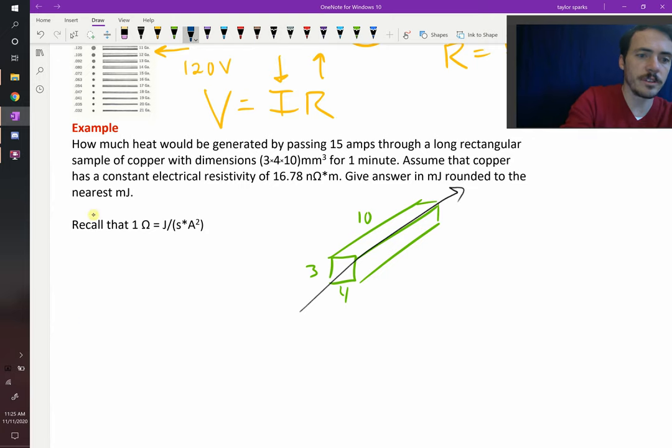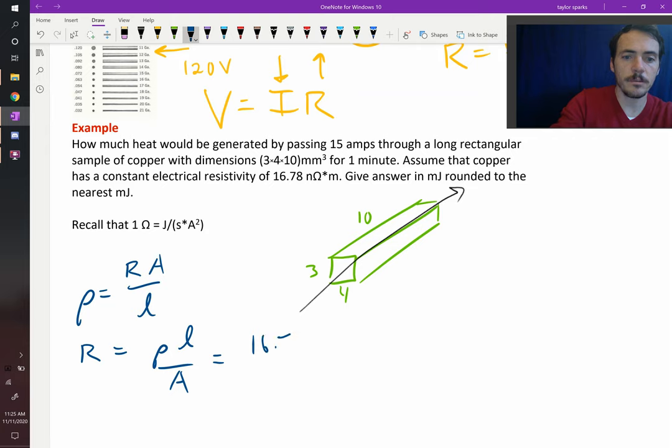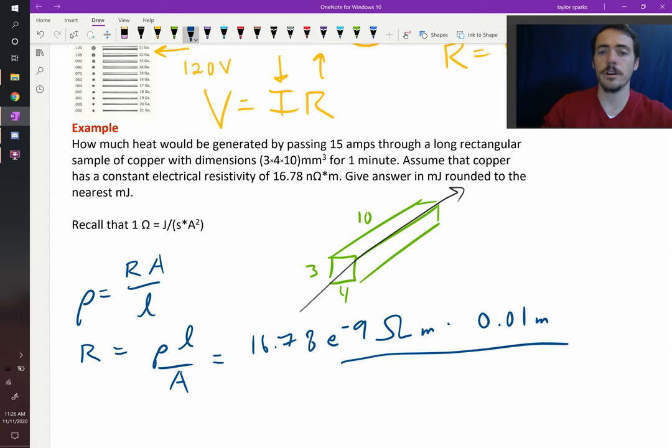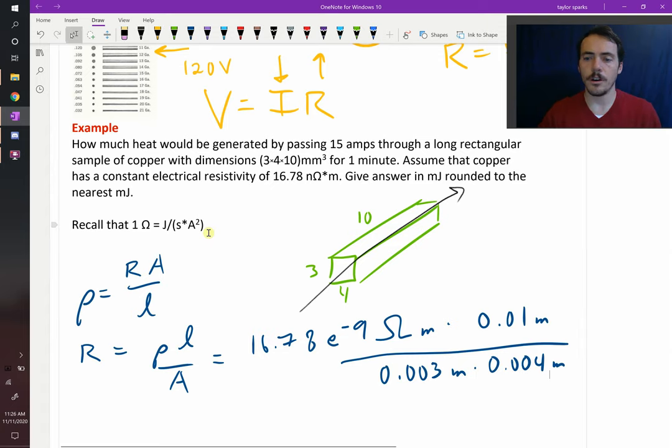We know that the resistivity is equal to our overall resistance times area divided by length, or alternatively, our resistance is going to be our resistivity times length divided by area: R = ρL/A. So let's go ahead and plug that in. That's 16.78 nano ohm meters, so E to the negative nine ohm meters. Now we multiply this by length, that is 0.01 meters, and divide this whole thing by our area. When we do this, our units cancel out except for ohms, and we're able to calculate what the resistance of this sample would be.